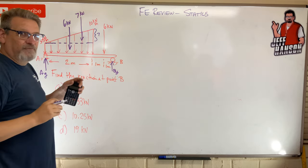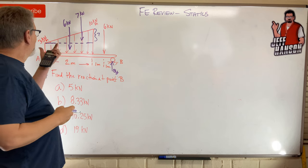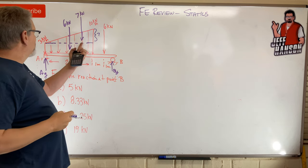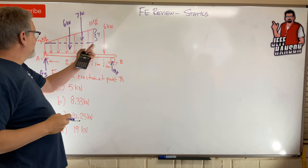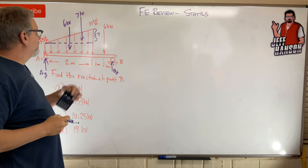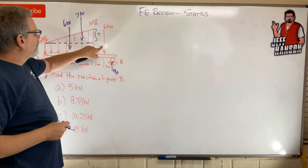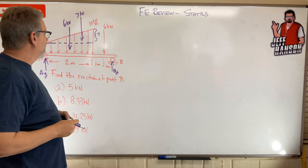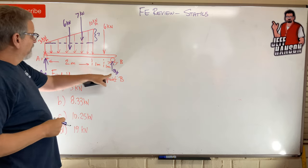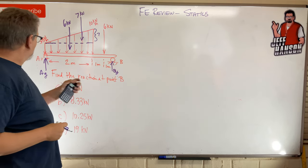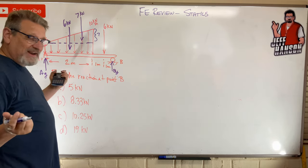We apply the triangle force at its centroid — two-thirds of the base from the skinny end, or one-third from the fat end. Then of course we have this 6 kN point load over here. We're looking for By, so let's take the moment at A.